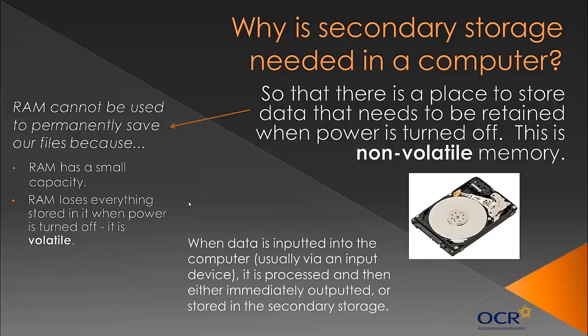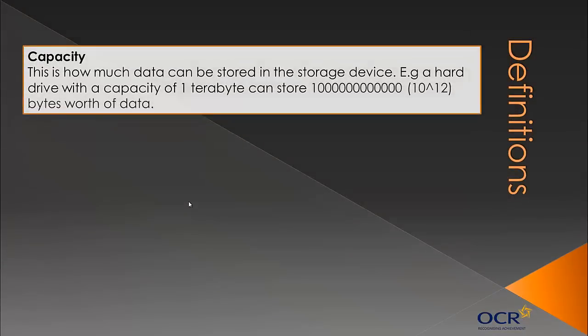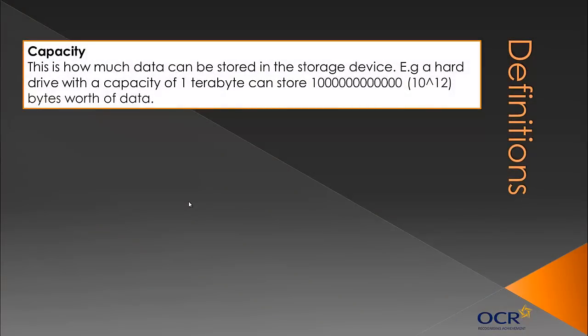When data is inputted into the computer, usually via an input device, it's processed and then either immediately outputted or stored in secondary storage, as we looked at in the input/output devices video. We've got five definitions to look at, all to do with storage. A lot of them we use in common English, but it's important to be specific to storage devices.